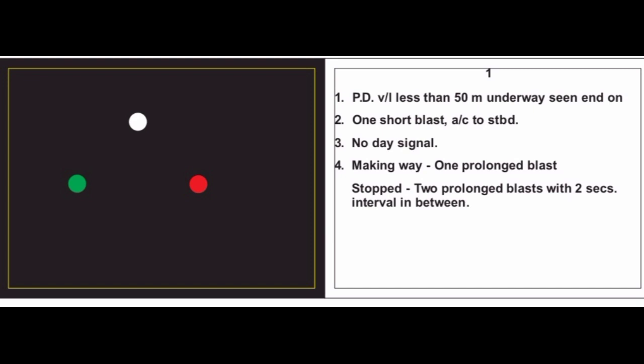Card 1: We are seeing a power driven vessel less than 50 meters, underway, seen end-on. End-on means we are seeing it right ahead. The action for our own vessel is to give one short blast and alter course to starboard — as per head-on situation, each vessel alters course to starboard and passes port to port. There is no day signal for the power driven vessel. Sound signal: making way — one prolonged blast; stopped — two prolonged blasts with two-second interval.